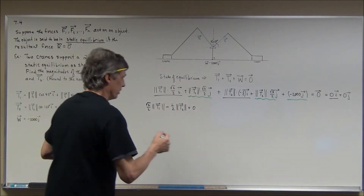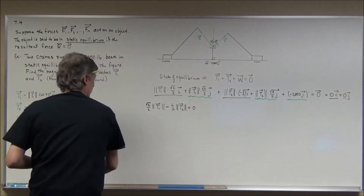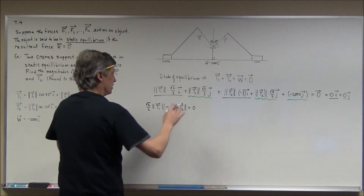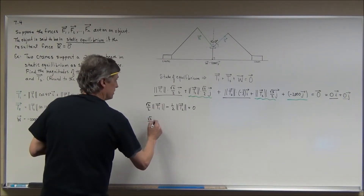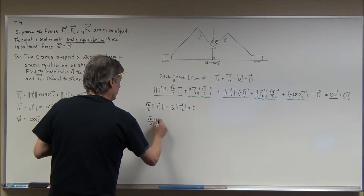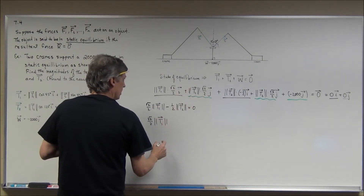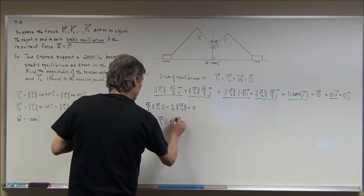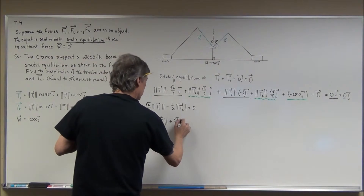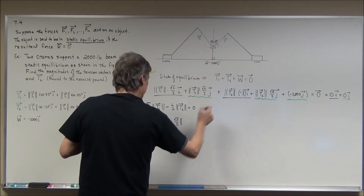And I'm also going to set it equal to zero. So that's going to give me — it's going to be a little messy — the square root of 2 over 2 times the magnitude of vector T sub 1, plus the square root of 3 over 2 times the magnitude of vector T sub 2.